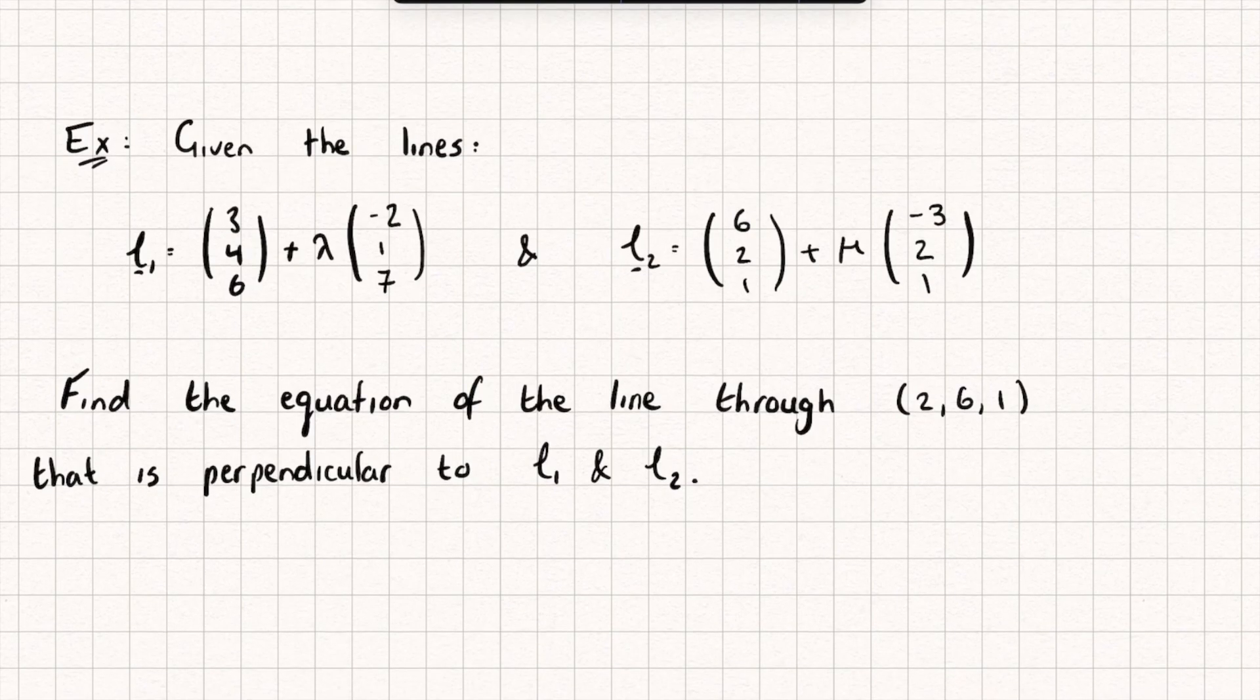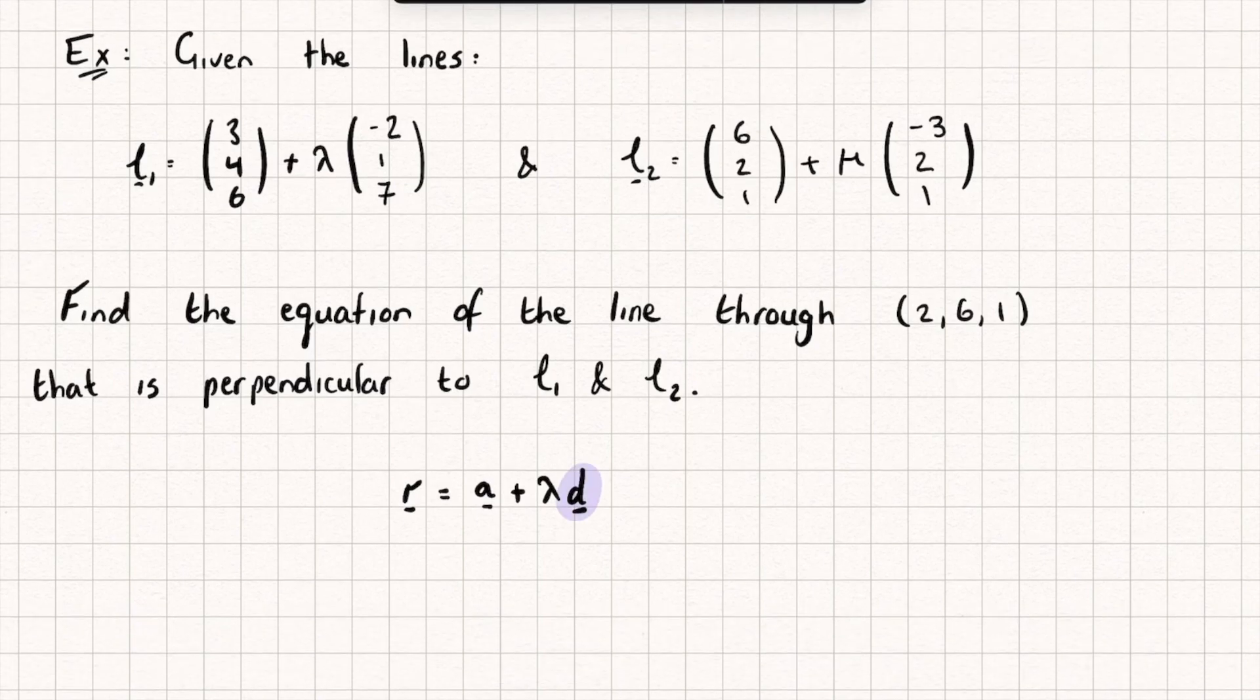So let's think how we can do that. Well, the new line is going to have some form like this, a vector equation of the position vector a, which is just a point on the line, plus some scalar multiple of the direction vector of the line. In the question we're given a point that is on the line, it's the point (2,6,1). So this is going to be my position vector, that's going to tell me how to get onto the line. And then we need to find the direction vector D.